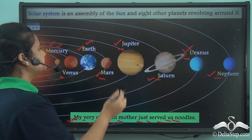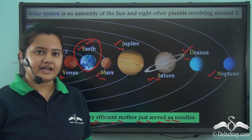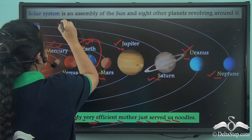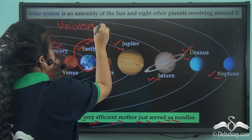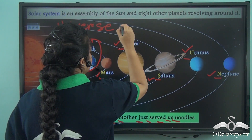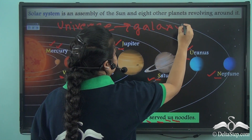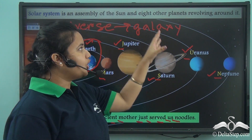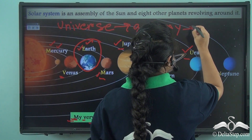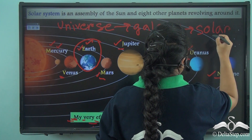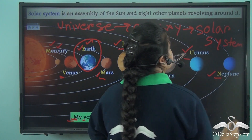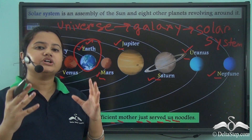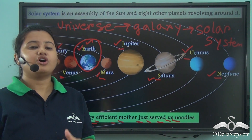Earth is one of the planets present in our Solar System and we all live on Earth. The Universe is the vast limitless area that consists of several galaxies. The galaxy where we live is the Milky Way, or Akash Ganga Galaxy. All these galaxies are further subdivided into various solar systems. The solar system we are part of consists of the Sun and eight other planets, and Earth is the third planet of this solar system.